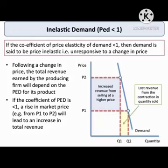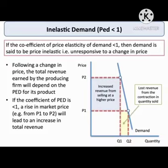First is inelastic demand. If the coefficient of Price Elasticity of Demand is less than 1, then demand is said to be price inelastic, or unresponsive to a change in price. Following a change in price, total revenue earned by the producing firm depends on the PED for its product. If the coefficient is less than 1, a rise in market price will lead to an increase in total revenue.